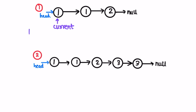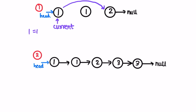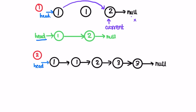Now we check if current.val is equal to current.next.val — if that is the case, we take current.next and point it to current.next.next, removing the connection in between. Now we check again: current is not equal to null, but current.next is equal to null, so we end the iteration. We can now return the head of the linked list, which will be our output.